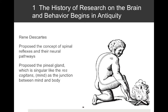Descartes tried to explain where the Re Cogitans — the mind — was located, and he felt it was the pineal gland, a small gland behind the brain stem of which there is only one. He felt it was the junction between mind and body. Still today we call this the interactionist dilemma — we still don't know how a material body and an immaterial mind would actually influence each other.